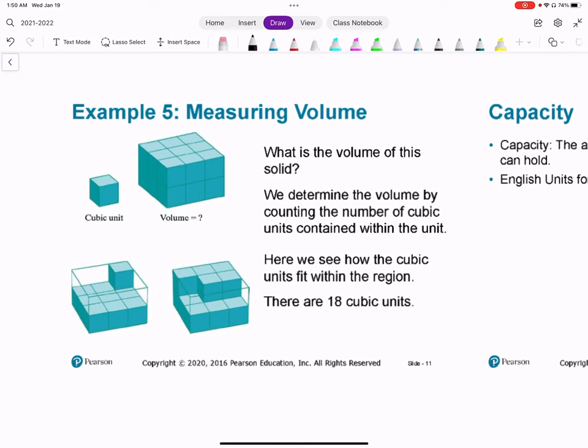It says, what is the volume of this solid? We determine the volume by counting the number of cubic units contained within the unit. Here we see how the cubic units fit within the region, and there are 18 cubic units. If you look at the top here we have 1, 2, 3, 4, 5, 6, 7, 8, 9. So we have 9 of those, and then another 9 on the bottom. So 9 plus 9 equals 18, or you can think about it as 9 times 2.